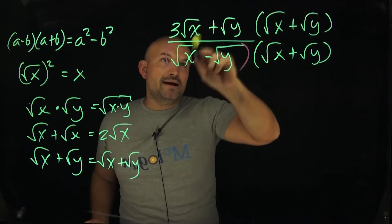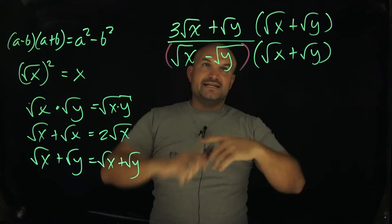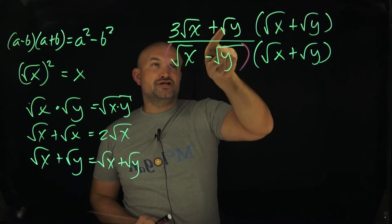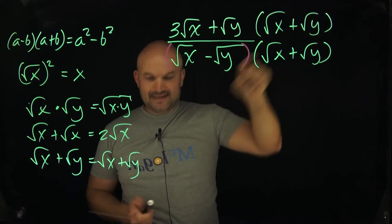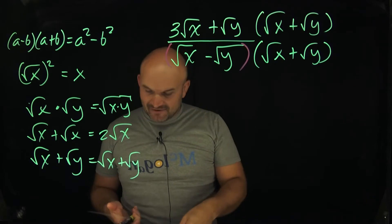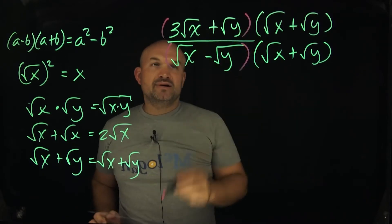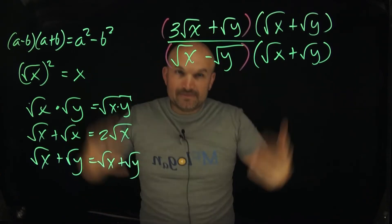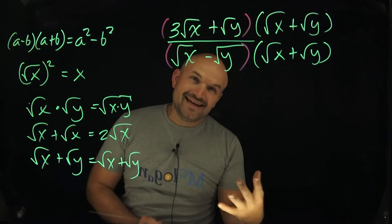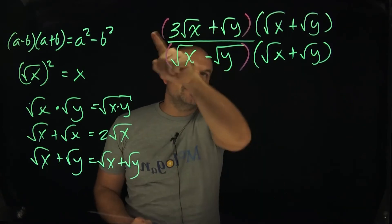And remember, I don't want to keep it written like this, because if you keep it written like this, what this is telling me mathematically is just the square root of y times this. And that's not the case. We are multiplying this times everything in the top. So therefore, I'm going to want to insert parentheses to remind myself, because it's very easy to forget and make mistakes if you don't insert these parentheses.